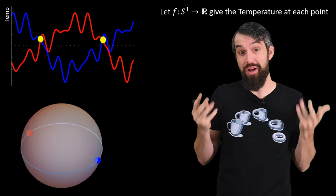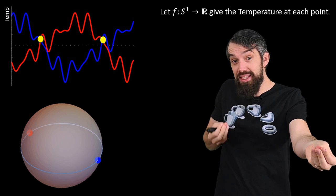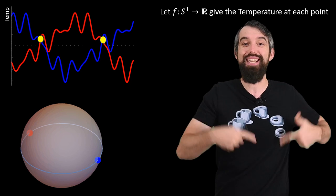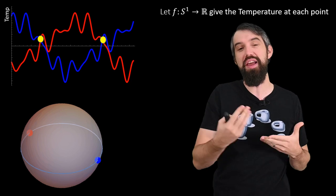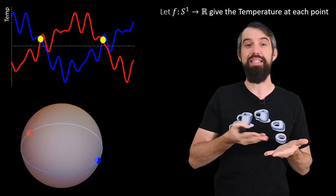This is actually just intermediate value theorem once again. If you're saying the temperature at one point is initially less than the temperature at its antipode, after you go all the way around the circle, it's now flipped and is more than the other side. Once was less, once was more. Somewhere in the middle has to be exactly equal.